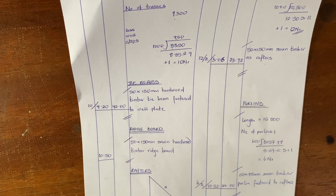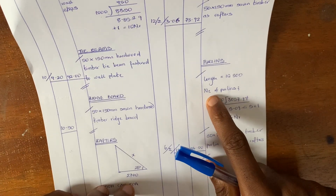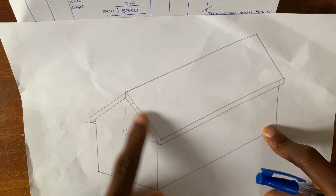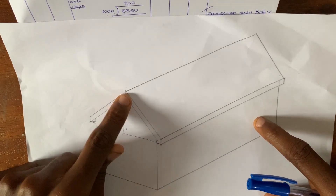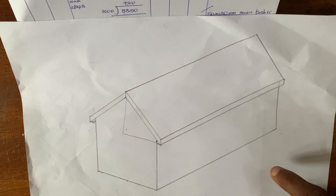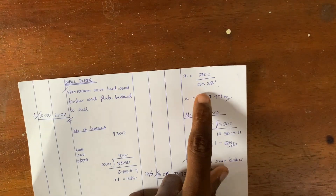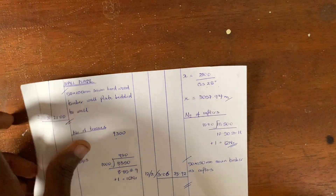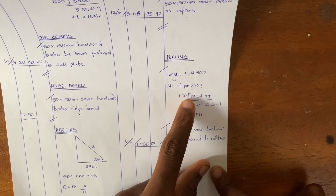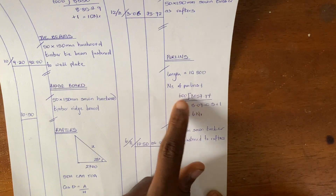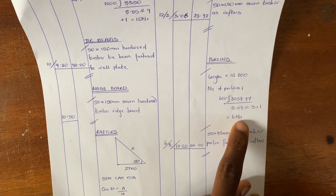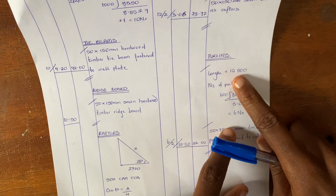Now that we know our purlins are 10,500mm, we are going to determine the number of purlins. The purlins are lined on top of the rafters. We calculated our rafter to be 3,057.94mm. You divide this by the purlin spacing, and our specification says it is 600mm. When you divide, that is approximately 5.09, so approximately 5 plus 1, which equals 6. We are going to be having 6 purlins of 10,500mm.